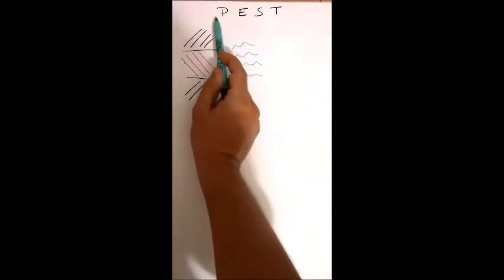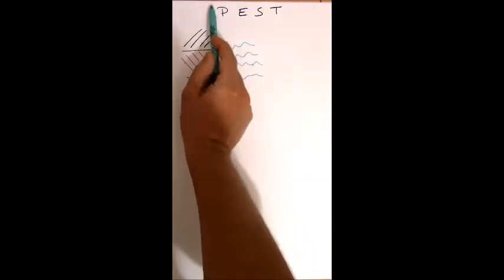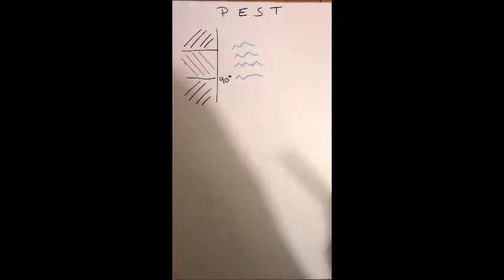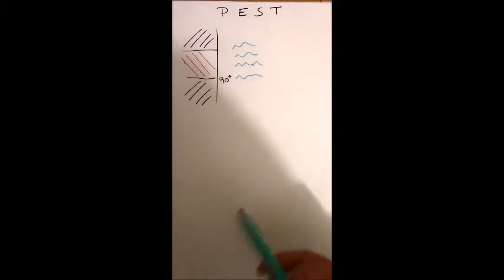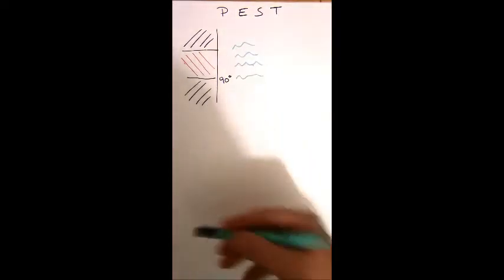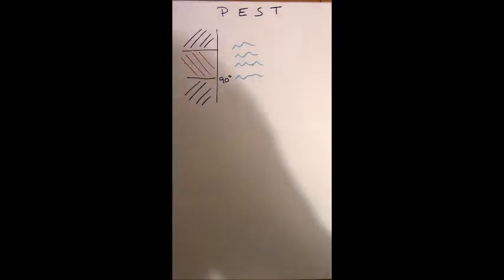Again, like we've talked about in other physical geography landform formation, I'm going to go through this PEST idea. The P stands for the processes involved, the E is the explanation - actually how does it form, how do those processes lead to the change in the landscape. The S is sequencing - fundamentally important to make sure we have that correct sequence in that step-by-step process. And the T is the terminology and the time scale on which we're talking.